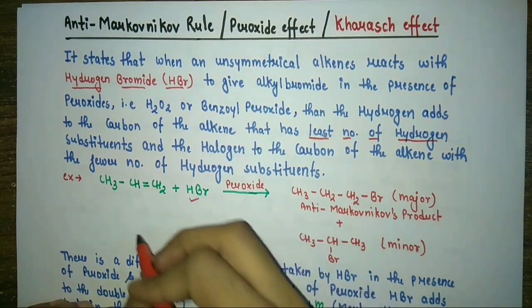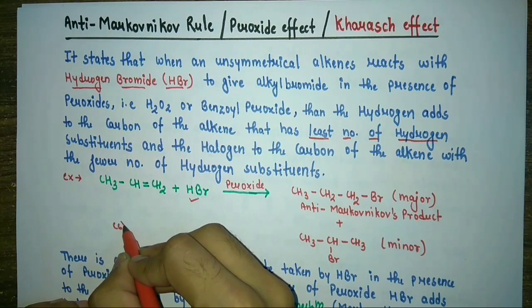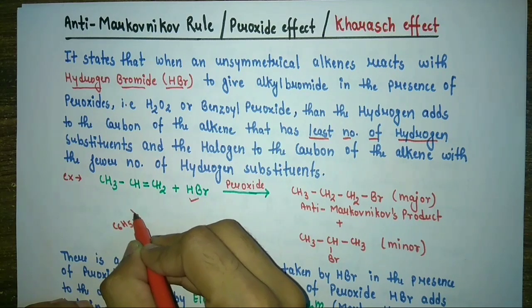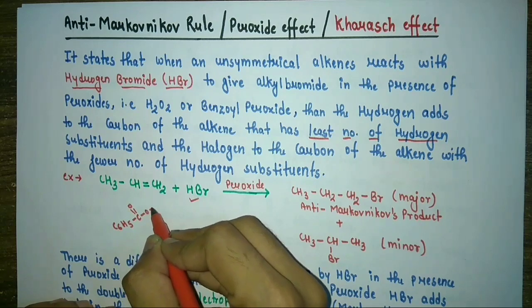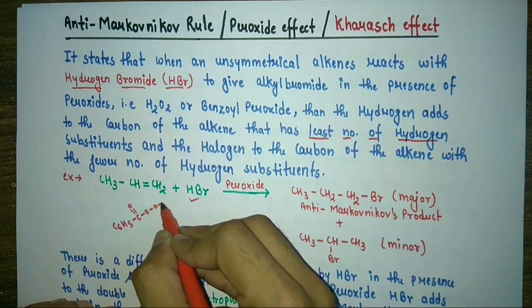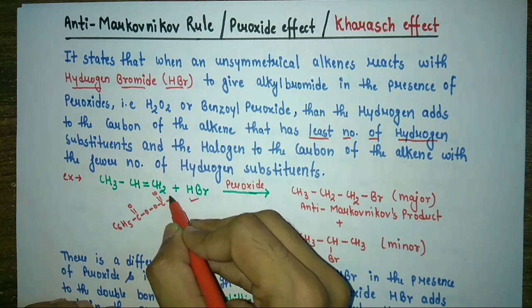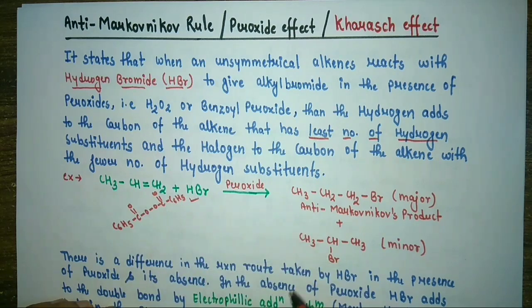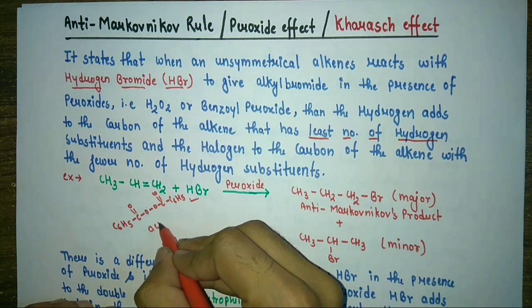Benzoyl peroxide has the structure C6H5-C(=O)-O-O-C(=O)-C6H5. It is used as an acne cleanser as well.